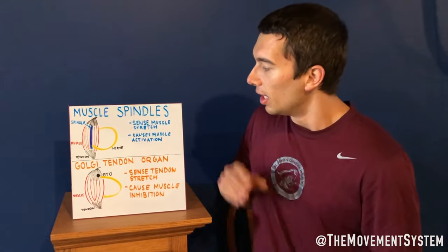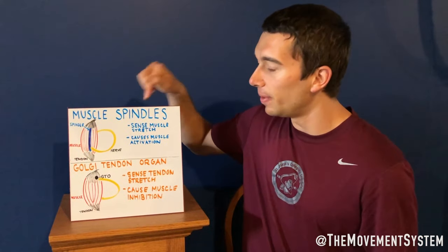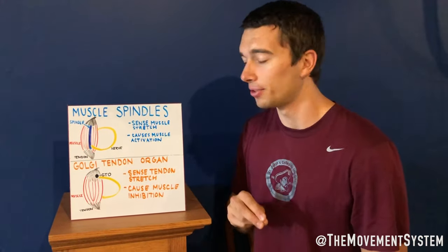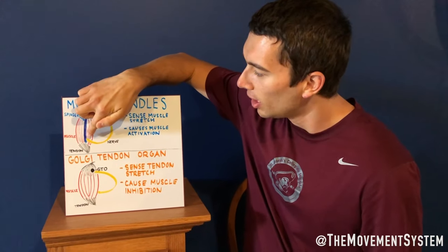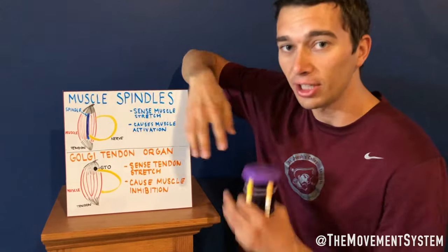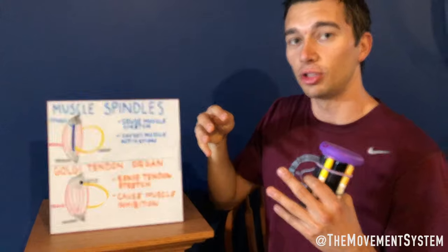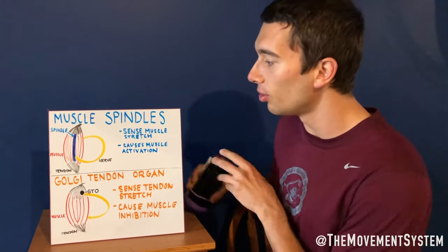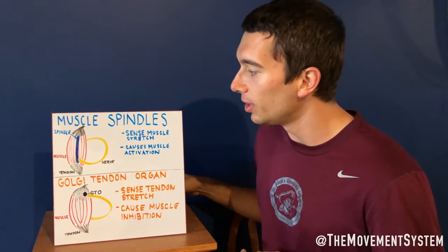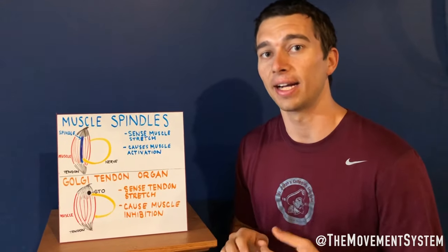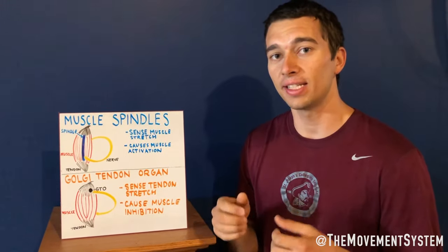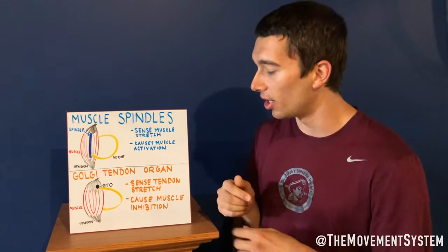Just to recap: muscle spindles sense muscle stretch — that intrafusal fiber senses that the muscle is stretching and causes a muscle contraction. Golgi tendon organs are doing the opposite: they're sensing that the muscle is activating really hard and telling the muscle to relax. They're sensing that activation and causing inhibition.